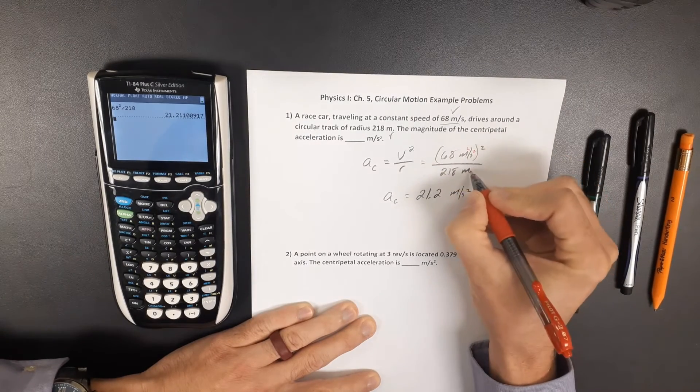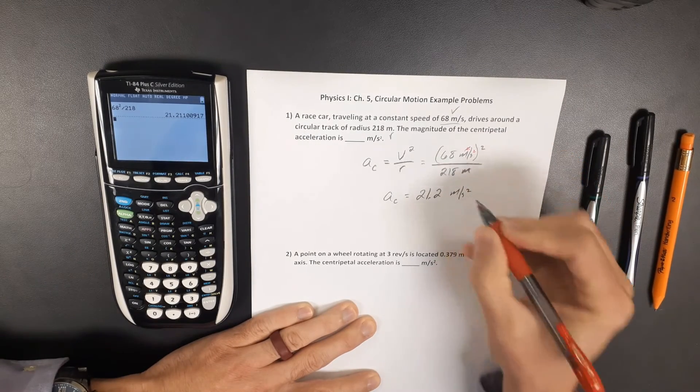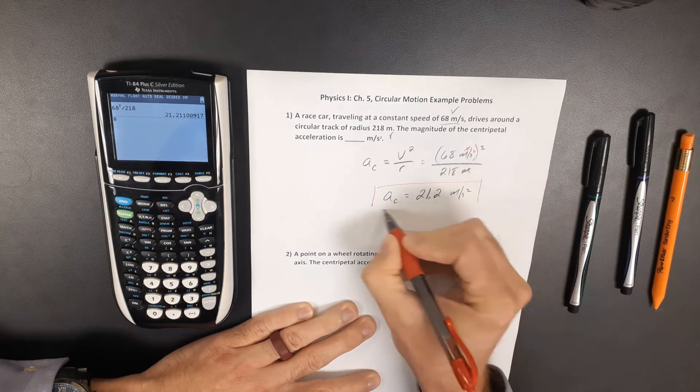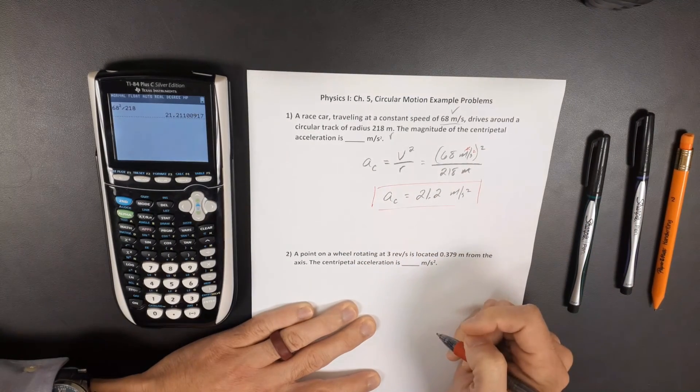Right here, the meters in seconds squared and the meters down below canceled out. So 21.2 meters per second squared.